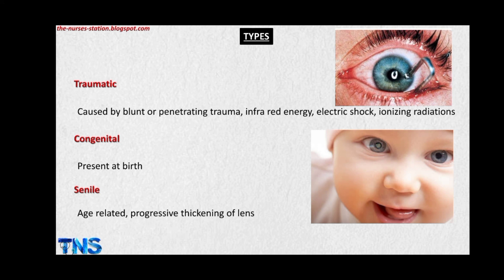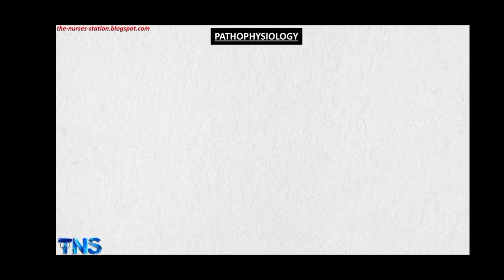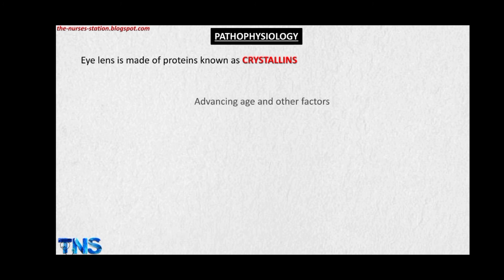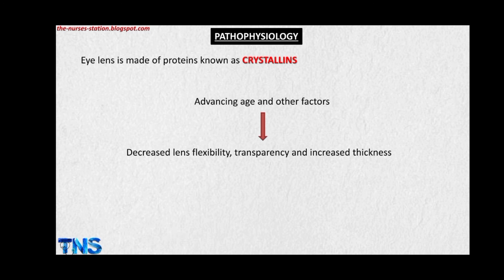The senile type is caused by progressive thickening of the lens. Regarding pathophysiology, the eye lens is made up of water and proteins known as crystallins. With aging and other associated factors, there is decreased lens flexibility, decreased transparency, and increased thickening of the lens. This causes breakdown and clumping of the tissues within the lens, causing the cataract.